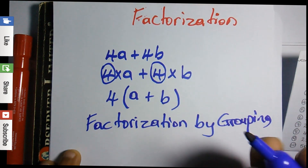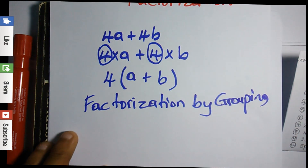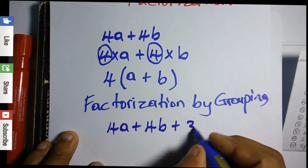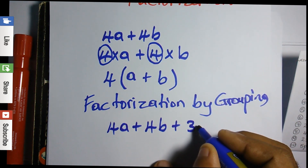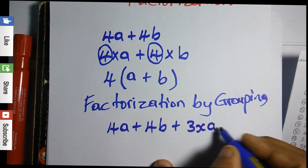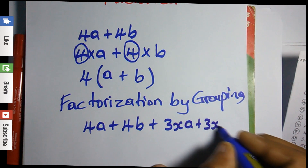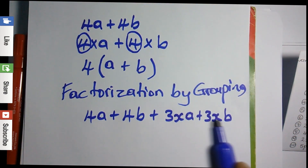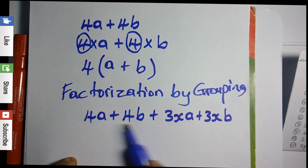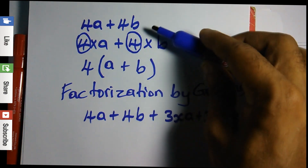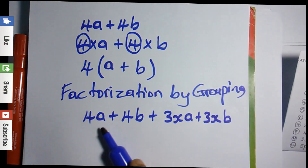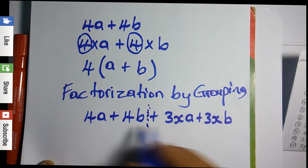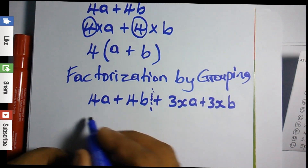For example, what if we had a question similar to this: 4a plus 4b plus 3xa plus 3xb? With factorization by distributive law we did two terms, but with factorization by grouping we have four terms. This is one pair and this is another pair. So what I would do is factorize the first pair first — look at each pair to see what's common. On the first pair we realize 4 is common, so we pull out the 4.